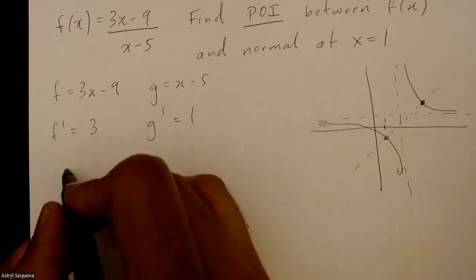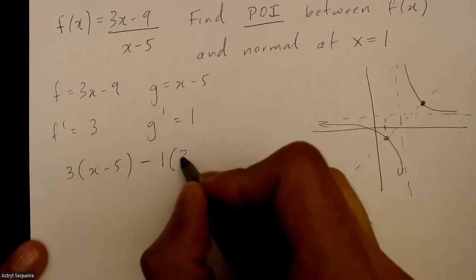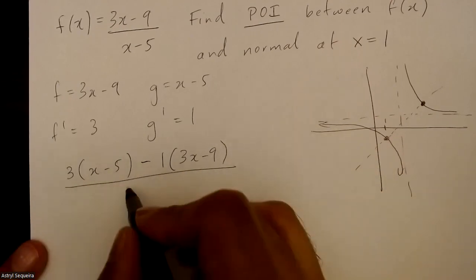So my quotient rule is f prime g minus g prime f divided by g squared.